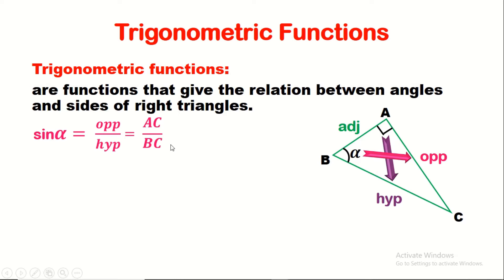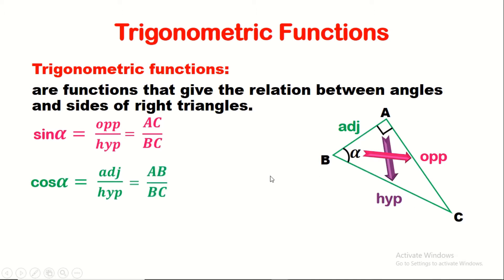The second trigonometric rule, which is very important, is cosine alpha. Cosine alpha is equal to adjacent over hypotenuse. Here the adjacent to this angle is the side AB, so cosine alpha equals AB over BC. Also, since AB is less than BC, cosine alpha is also less than or equal to 1.